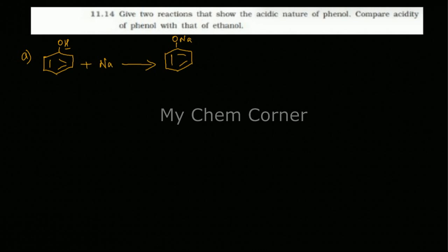Now the second question is to compare the acidity of phenol with that of ethanol. Phenol has a benzene ring structure; ethanol is C₂H₅OH. The alkyl group in ethanol is an electron-donating group. When electron-donating groups are present, they pull electrons towards the oxygen atom, which only strengthens the O-H bond, and therefore acidity is reduced.